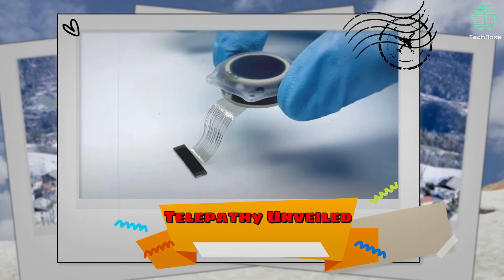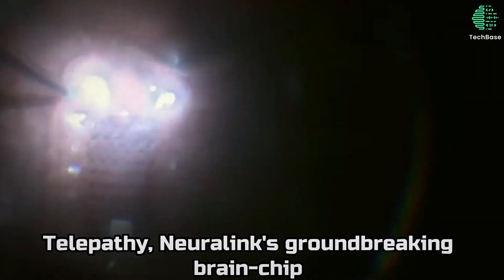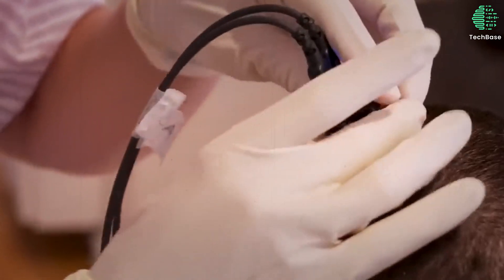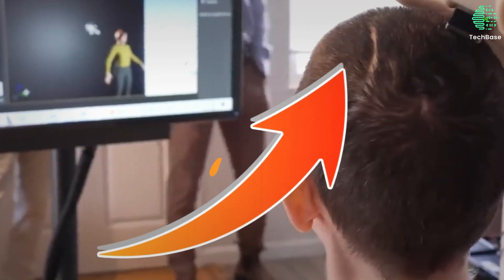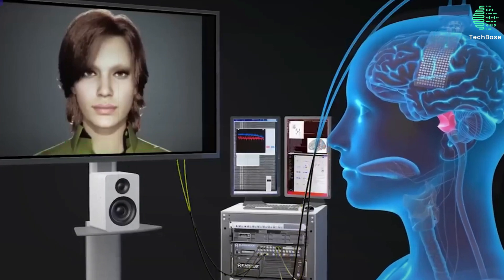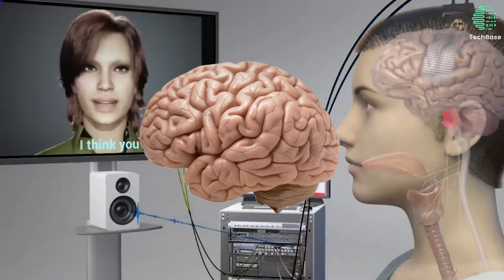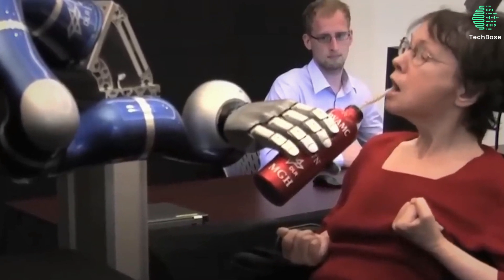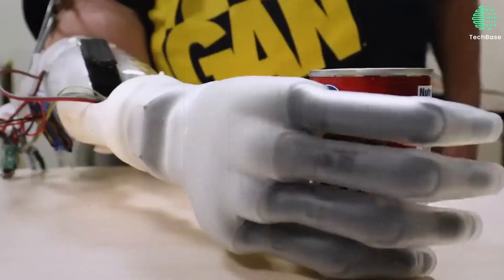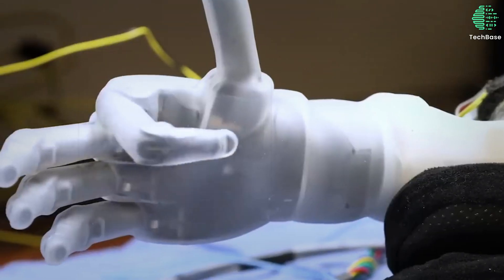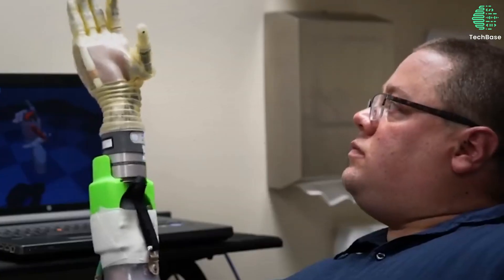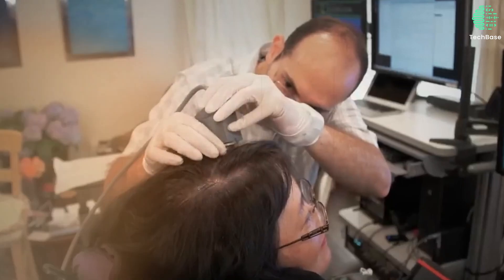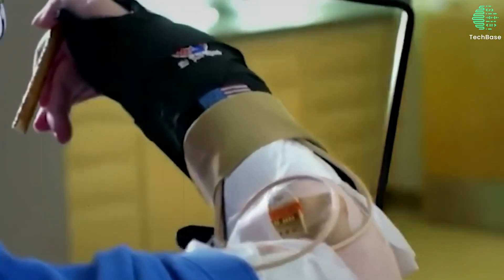Telepathy Unveiled. Telepathy, Neuralink's groundbreaking brain chip implant, represents a quantum leap forward in the field of neurotechnology. Directly attached to the brain, this innovative device enables the reading of neural signals and the control of external devices through thought alone. With the unveiling of telepathy, individuals like Noland Arbaugh, Neuralink's first human patient, gained unprecedented access to enhanced functionality and autonomy.